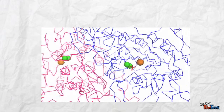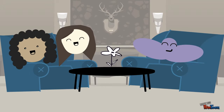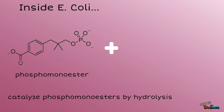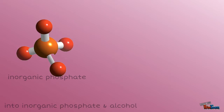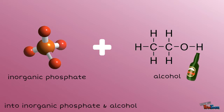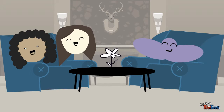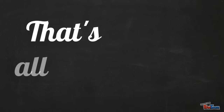So tell us, what do you do on the daily? On the daily, I hydrolyze phosphate groups to make them into alcohol and inorganic phosphate. That's awesome! Now let's give a hand for alkaline phosphatase!